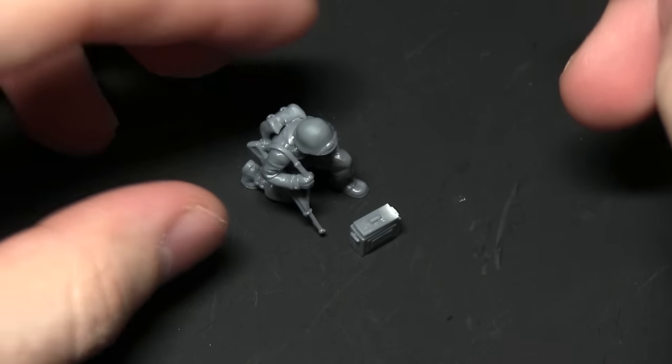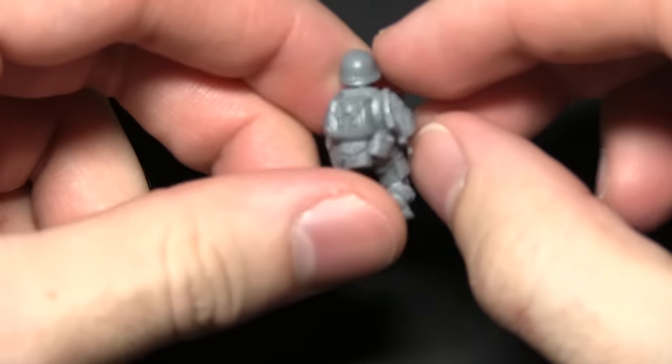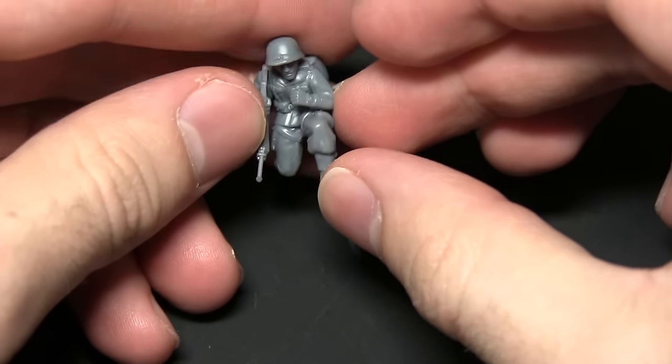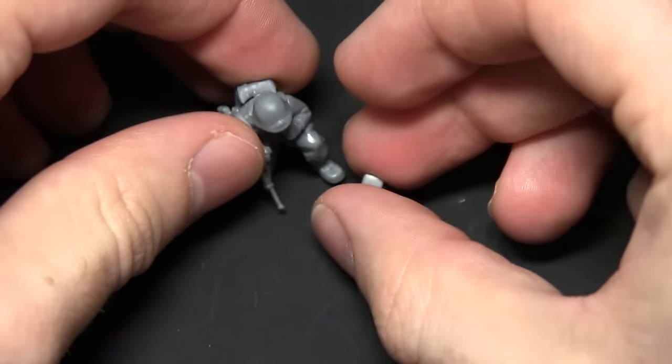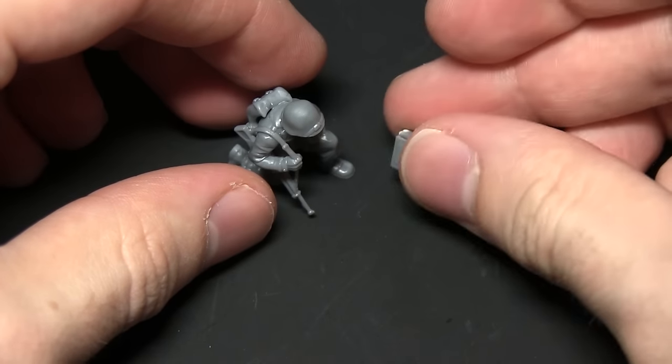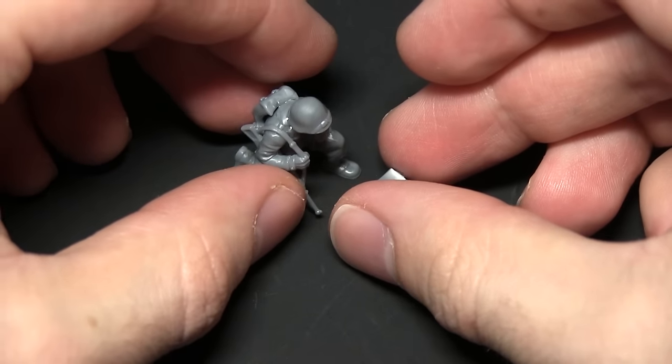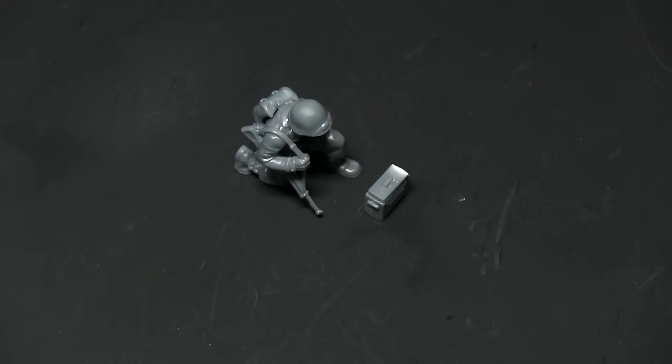And here we have the completed final member of the MMG team complete with a head and also some webbing as well. You can see the position we've gone for is one that's just about kneeling down and it's just ready to open up the ammo can that we've got at the feet here and start loading ammunition towards the gunner himself. So that's the MMG team, let's move on to the 57mm anti-tank team.